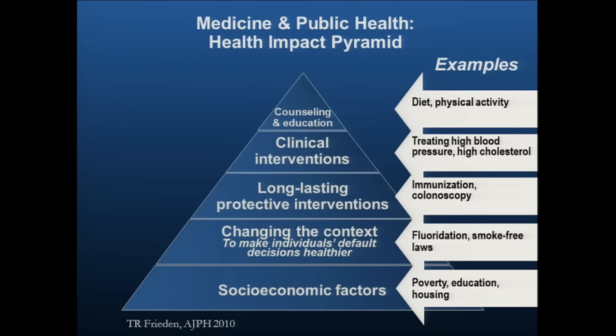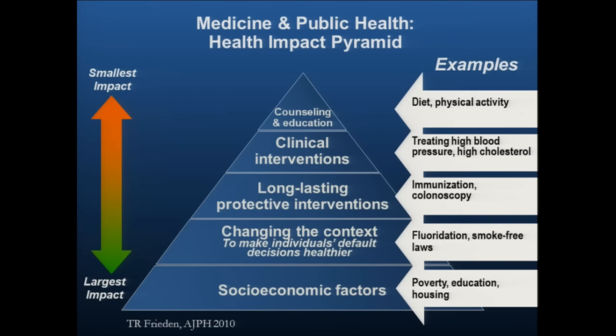At the top of the pyramid is the so-called counseling and education. You can tell Tom Frieden's bias — he thinks working at the bottom of the pyramid will improve the health of populations much more than working at the top. Notice that precision medicine and precision health are at the top of the pyramid, meaning that even if we do a great job, it may or may not have the biggest impact on population health. I'd like to take that idea and move forward, because I don't completely agree with this pyramid — I have my own pyramid idea.